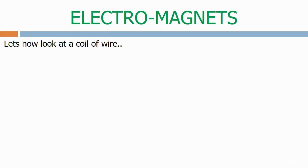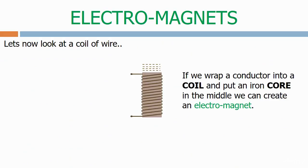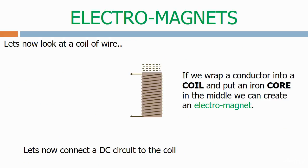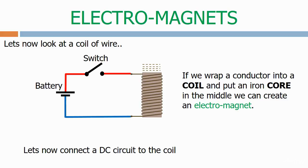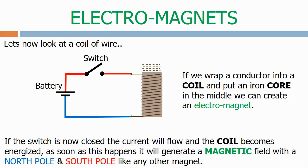Let's now look at a coil of wire. If we wrap a conductor into a coil and put an iron core in the middle, we can create an electromagnet. Let's now connect a DC circuit to the coil. Here we have a standard DC circuit with a battery with a positive and negative and a switch. If the switch is now closed, current will flow and the coil becomes energised. As soon as this happens it will generate a magnetic field with a north pole and south pole like any other magnet.